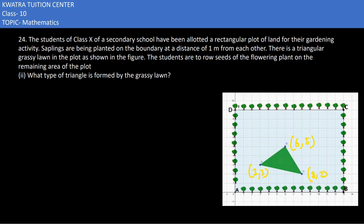In the second part it says, what type of triangle is formed by the grassy lawn? You have to find PQ's distance, QR's distance, and PR's distance. When you find all three distances, then only you would be able to tell which type of triangle it is.